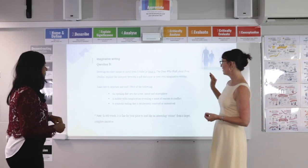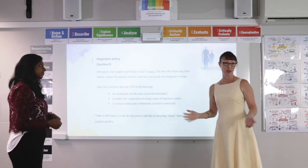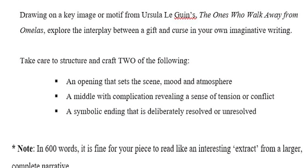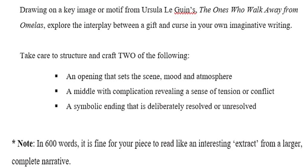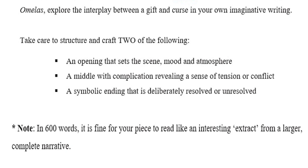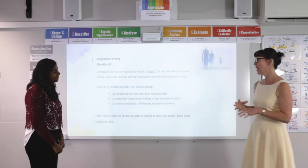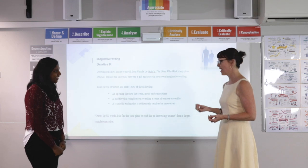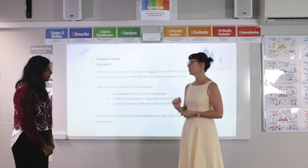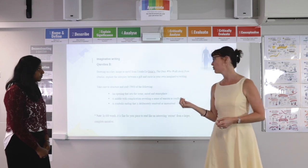Thanks, Karuna. That's the first part of this question. In the second part, we've set some structural aspects to help students plan and scaffold this. It says to take care to structure just two of the following: either an opening that sets the scene, mood and atmosphere; a middle and complication; and then a symbolic ending. It's 600 words with the 10% rule, which isn't a lot of writing time if you're crafting the power of suggestion and attention to detail. So we've asked that students look at just one of these, moving up to the complication or moving from the complication to a consciously resolved or unresolved ending.